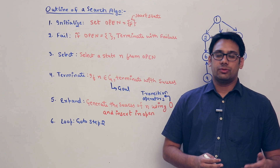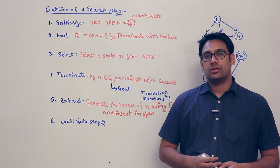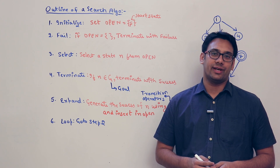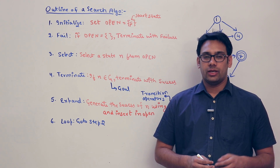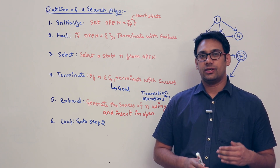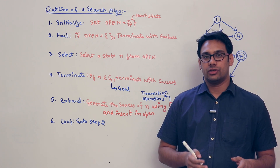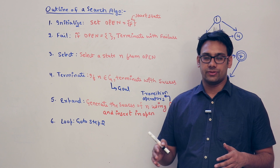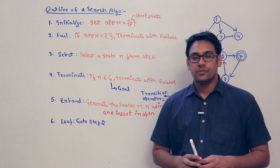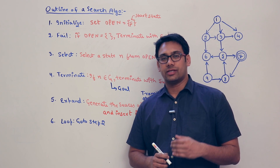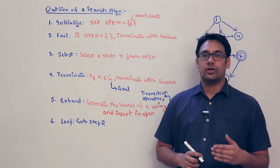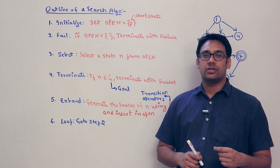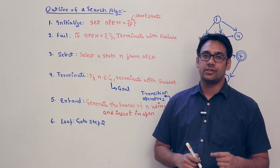In the previous videos we discussed about some of the problems related to real life problems, and for those problems we defined the state space. In the state space we defined a graph — how we can convert those problems in terms of a graph so that we can define the complete state of the process. In this video, we are trying to solve the problems with the help of search algorithms, and to apply those search algorithms we need the state space.